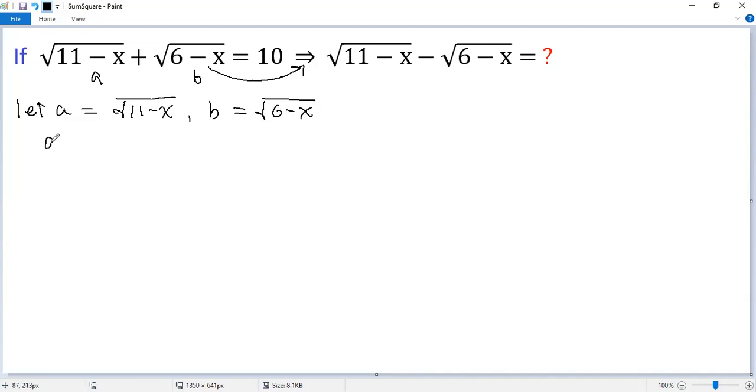So the given condition is a plus b equals 10. Now our target is a minus b. To figure that out, let's multiply a minus b and a plus b.